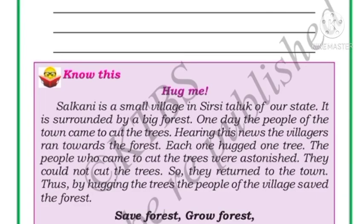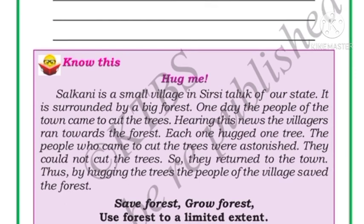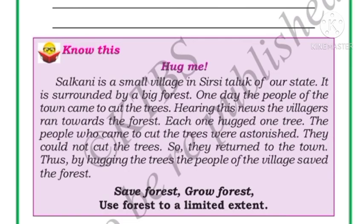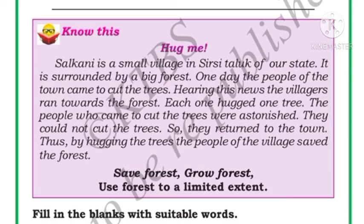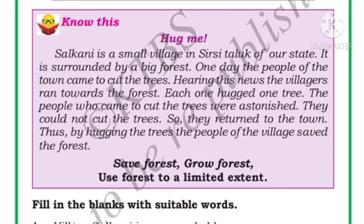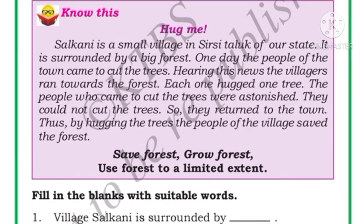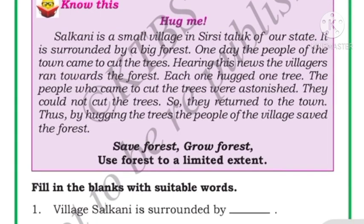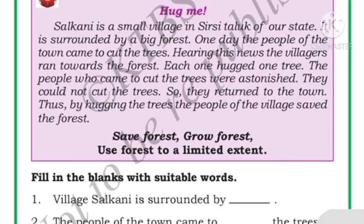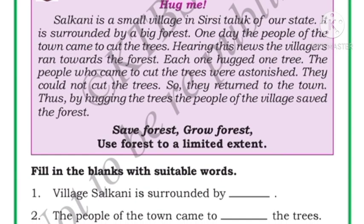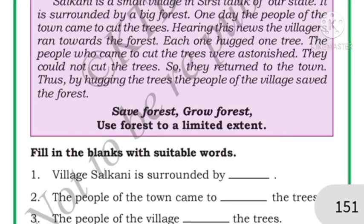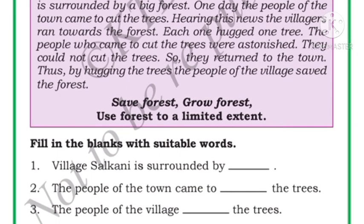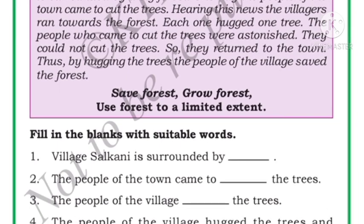Salkani is a small village in Sirsi taluk of Karnataka state. It is surrounded by a big forest. One day people from the town came to cut the trees. Hearing the news, the villagers ran towards the forest and each one hugged a tree. The people who came to cut the trees could not cut them and returned. Thus, by hugging the trees, the people of the village saved the forest. Save forest, grow forest, use forest to a limited extent — these are slogans on conservation of forests.